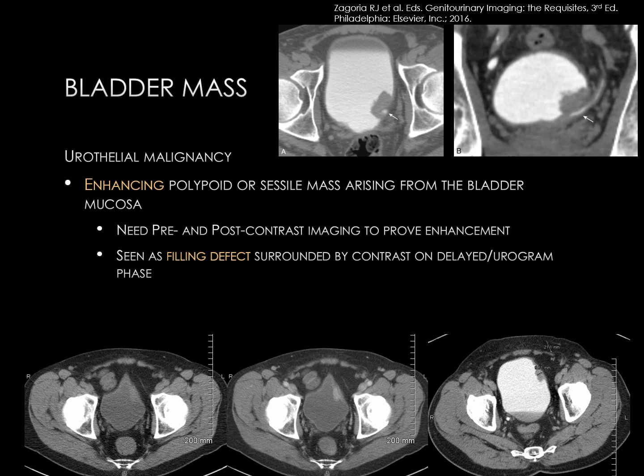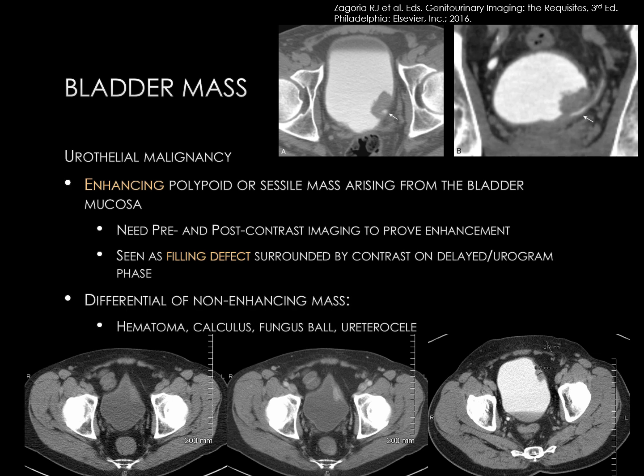Another example is seen at the upper portion of the slide, with an axial CT image on the left and a coronal CT image on the right. There is a lobulated mass at the left posterior aspect of the bladder adjacent to the uretero-vesicular junction, which is indicated by the white arrow. If you encounter a bladder mass that is not enhancing, the differential includes hematoma, calculus, fungus ball, or ureterocele.